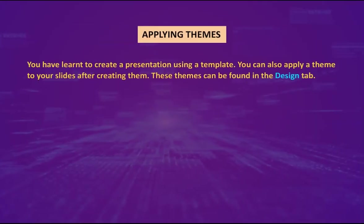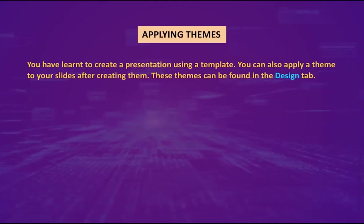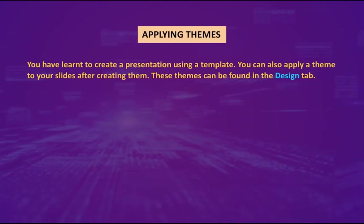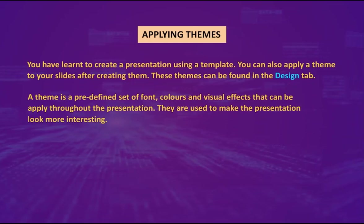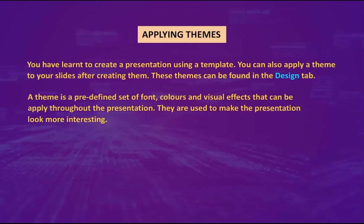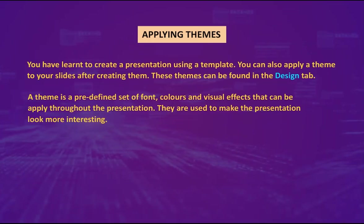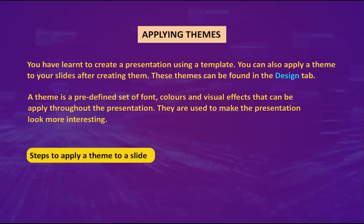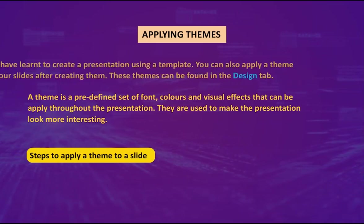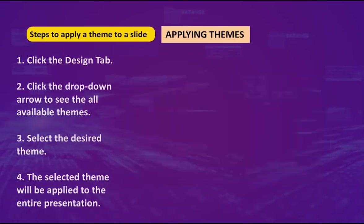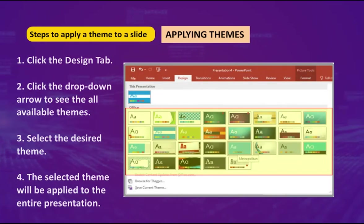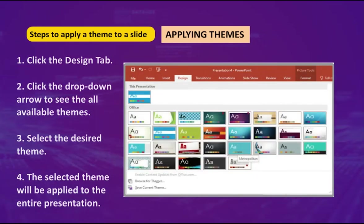Applying a theme: You can also apply a theme to your slides. Themes can be found in the Design tab. A theme is a predefined set of fonts, colors, and visual effects that can be applied throughout the presentation to make it look more interesting. Steps to apply a theme: one, click the Design tab; two, click the drop-down arrow to see all available themes; three, select the desired theme; four, the selected theme will be applied to the entire presentation.